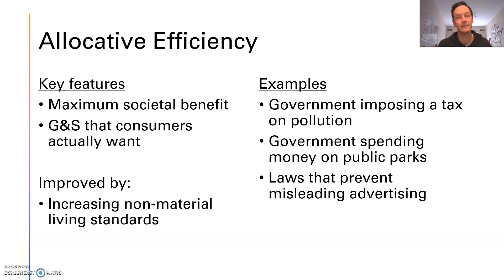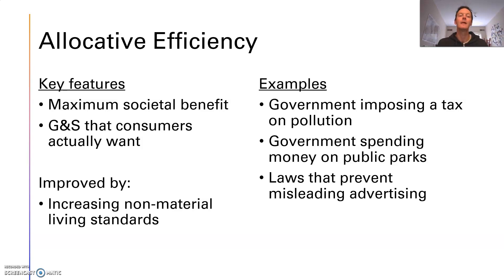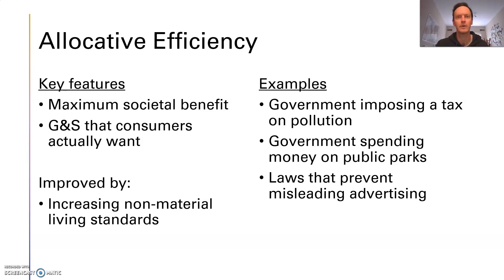That's why we also have allocative efficiency, because allocative efficiency kind of balances out technical efficiency. We're not going to be corporate overlords making workers work 24 hours a day with no rest or pay because we also want to achieve allocative efficiency. What allocative efficiency is all about is the allocation of resources which maximizes society's benefit, and secondly towards the production of goods and services that consumers actually want. This one really does balance out technical efficiency — as an economy we've got to pursue technical efficiency for productivity gains and lower cost of production, but we can't do it to the extent that people are miserable with no leisure time or time with their families.